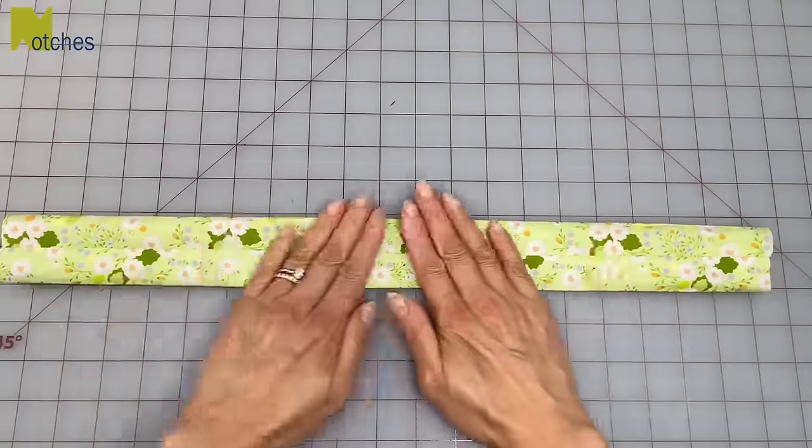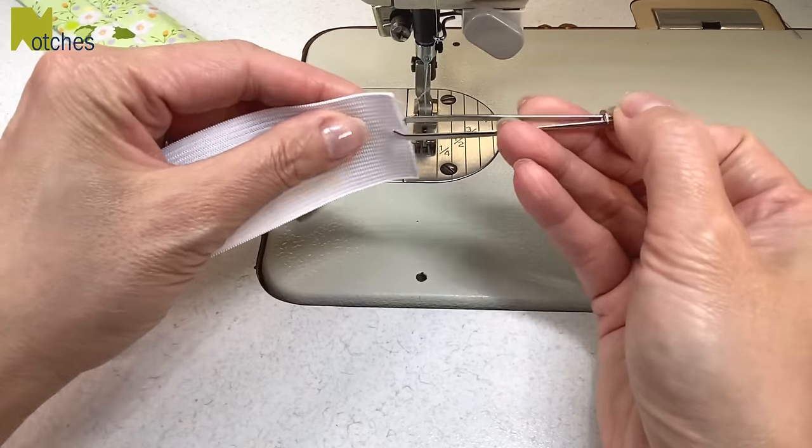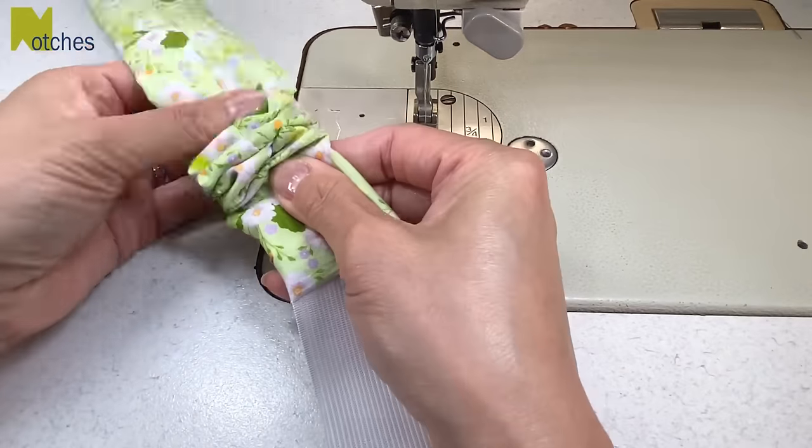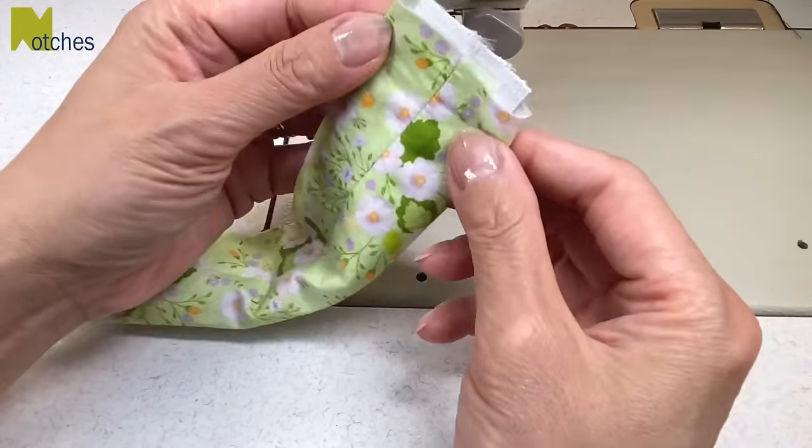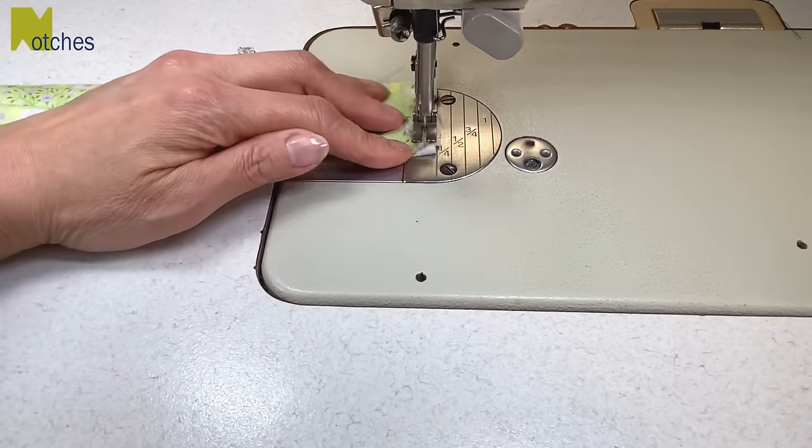Again, with the seam in the middle, just give it a press with your hand. Next, use a bodkin or safety pin to thread the elastic through the tube. Center the elastic and match your edges and then edge stitch in place.